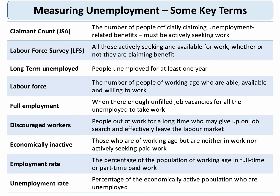There are two measures of unemployment in the UK. The claimant count is the number of people claiming the Job Seeker's Allowance. That figure is substantially less than the figure for the Labour Force Survey, which is all those people who are able, actively seeking and available for work, whether or not they're claiming benefit.